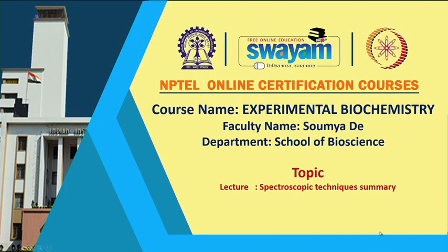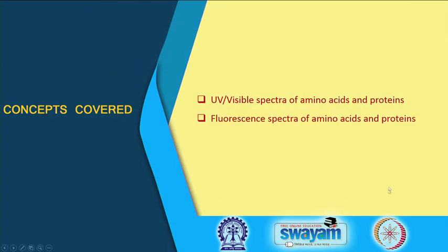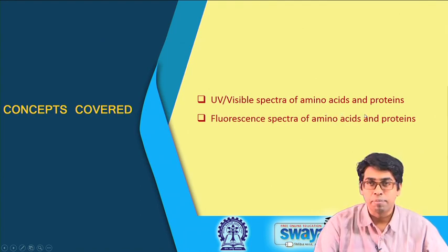Hello, welcome to the end of week 3. In this week we learnt about spectroscopic techniques. In this lecture I am going to summarize what we have learnt so far in week 3. Primarily we learnt about two techniques: one is the UV visible, that is the absorption method of determining amino acid and protein properties, and then also we learnt about the fluorescence spectra of amino acids and proteins.